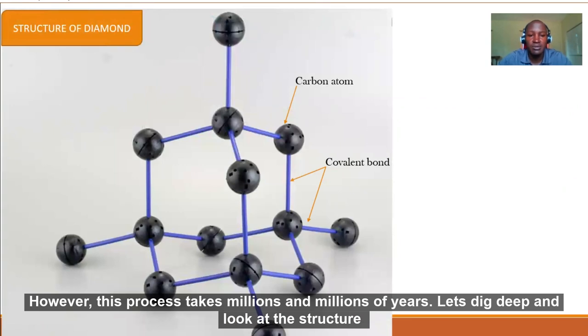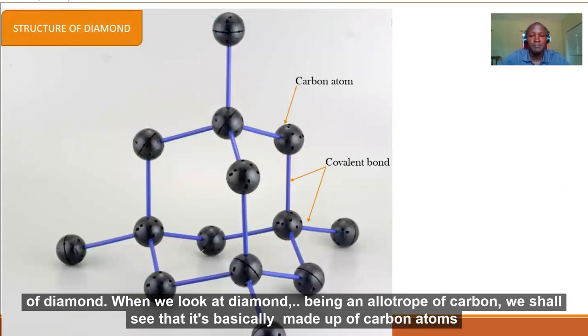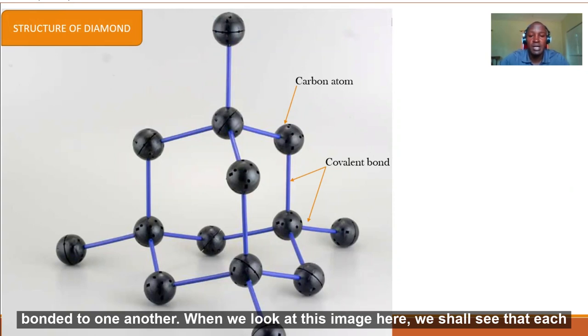Let's dig deep and look at the structure of diamond. When you look at diamond being an allotrope of carbon, we shall see that it's basically made up of carbon atoms bonded to one another.